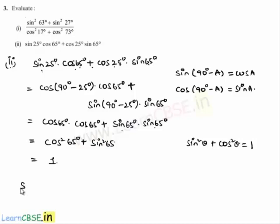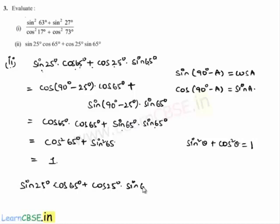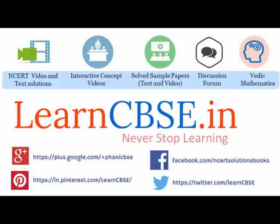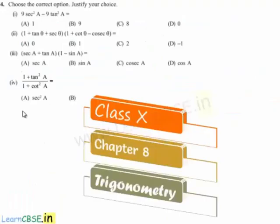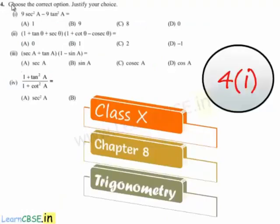Therefore, sin 25 degrees into cos 65 degrees plus cos 25 degrees into sin 65 degrees is equal to 1. Moving on to the fourth question.